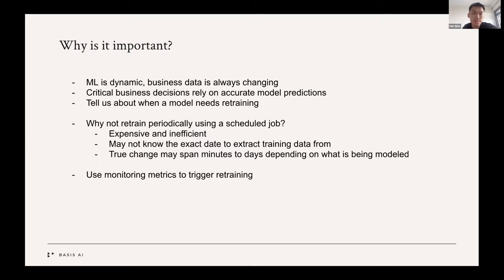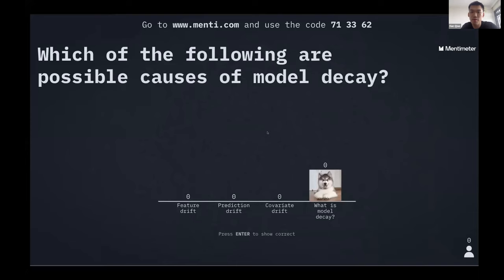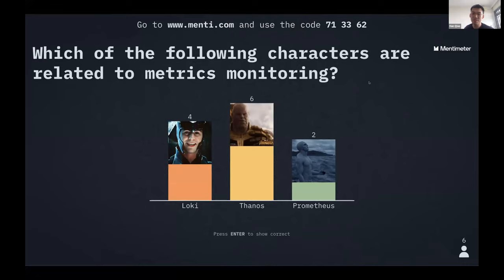Now, before I dive into our solution, I would like to start with a little game of two truths and one lie. This is a series of multiple choice questions. They are very light-hearted, so don't be afraid to vote. You can simply go to www.menti.com with 713362 as the code, and you will be presented with a series of questions. So the first question we have is which of the following characters are related to metrics monitoring?